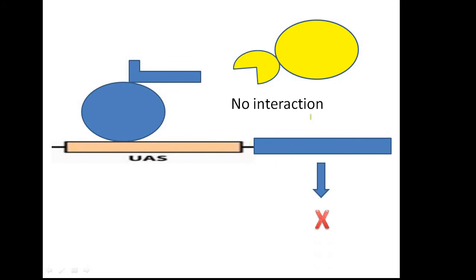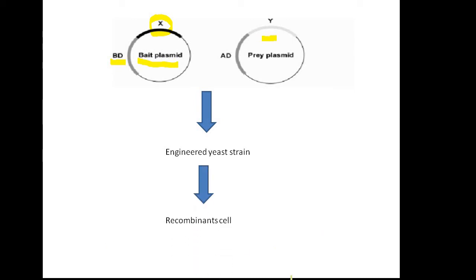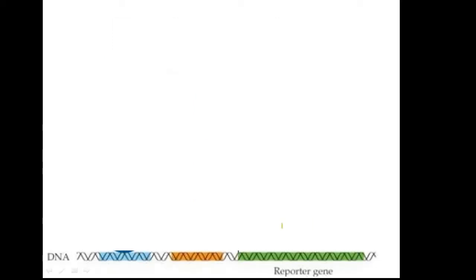To validate this process, scientists use a reporter gene to determine whether two proteins are interacting or not. The process involves two separate plasmids: one contains the desired target protein (bait), fused with the protein coding sequence of the DNA binding domain; the other contains the potential interacting protein (prey), fused with the protein coding sequence of the activation domain. Both plasmids are co-transformed or sequentially transformed into an engineered yeast strain that may lack a particular metabolite or contain a reporter gene. Only if these two proteins interact will the engineered strain survive, allowing isolation of recombinant cells.